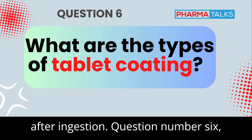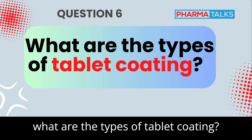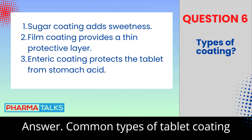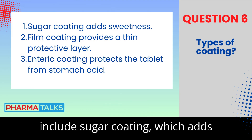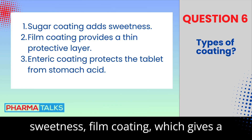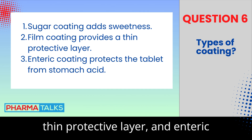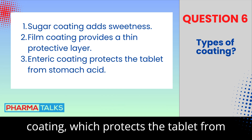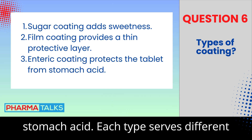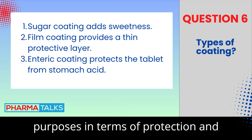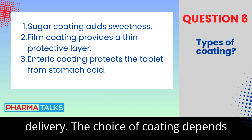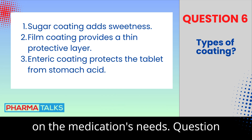Question 6: What are the types of tablet coating? Common types of tablet coating include sugar coating, which adds sweetness; film coating, which gives a thin protective layer; and enteric coating, which protects the tablet from stomach acid. Each type serves different purposes in terms of protection and delivery. The choice of coating depends on the medication's needs.